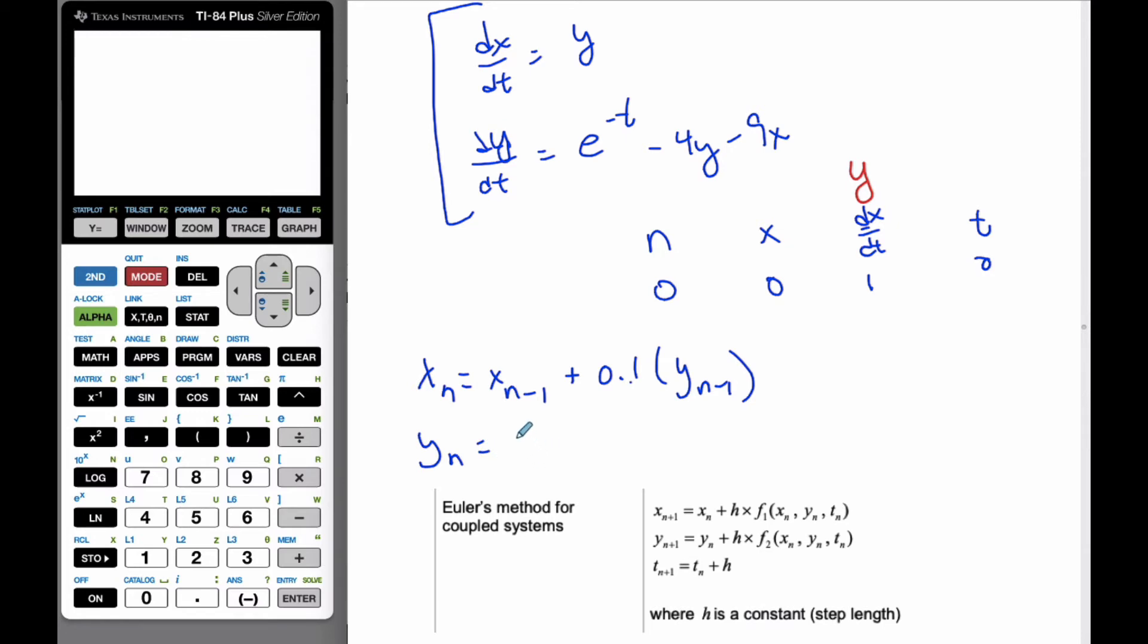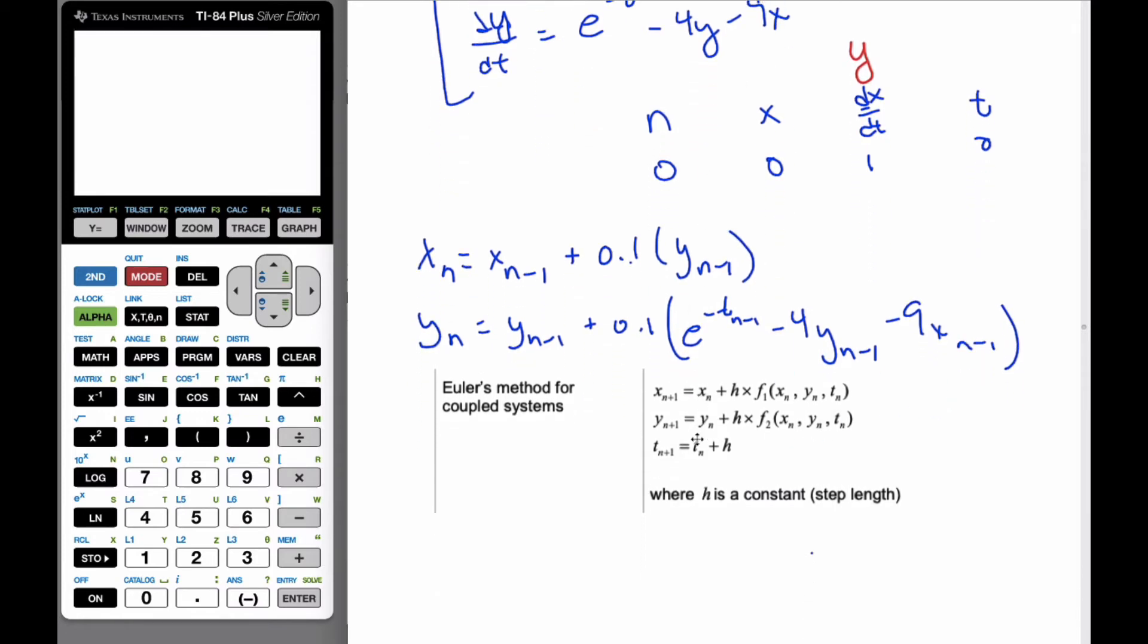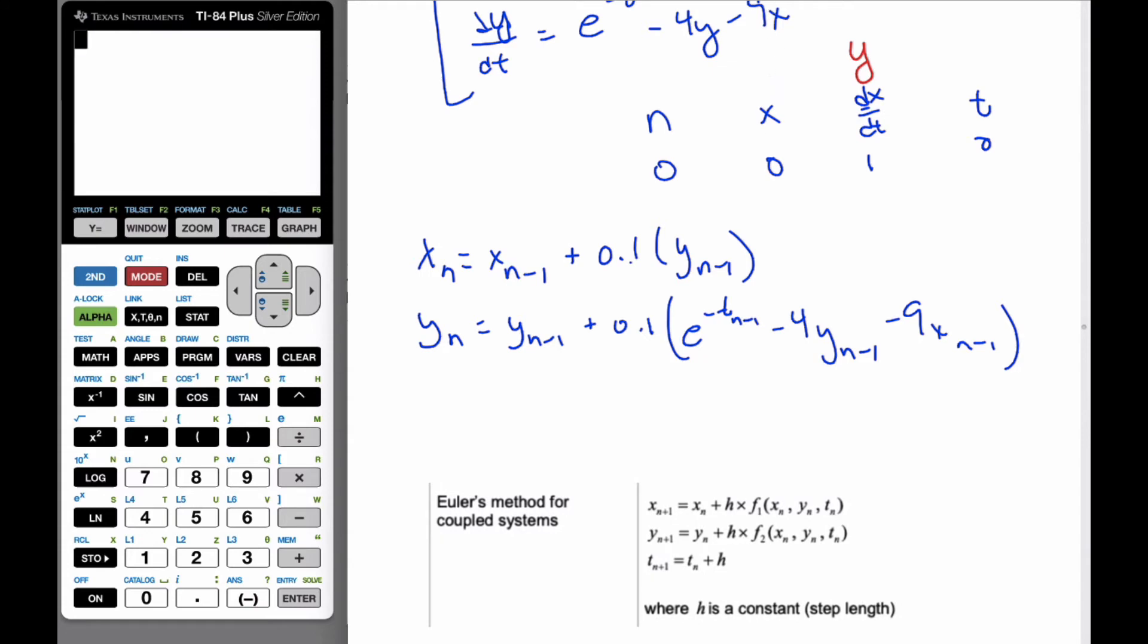And then my next one, yn, is going to be yn minus 1 plus 0.1 times this value here. So it's e to negative tn minus 1 minus 4yn minus 1 minus 9xn minus 1. And finally, we'll also do our t value, where tn is equal to tn minus 1 plus the step here.